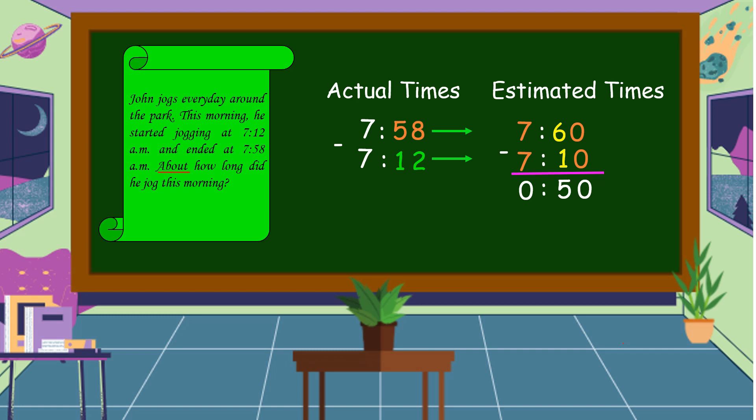To know if our estimated time is correct or reasonable, we're going to subtract our actual time. 7:58 minus 7:12. 8 minus 2 is equal to 6. 5 minus 1 is equal to 4. 7 minus 7 is equal to 0. 46 is closer to 50. Therefore, John jogged for about 50 minutes.